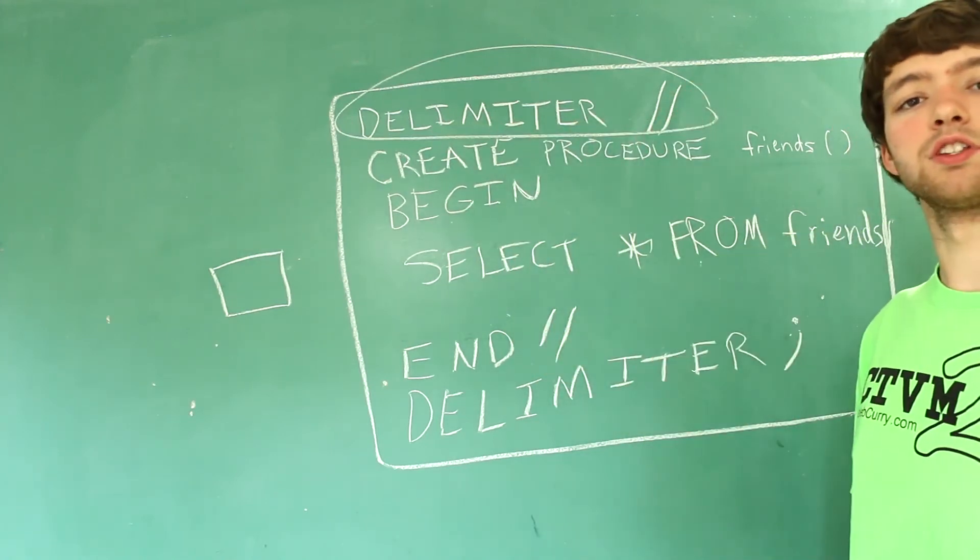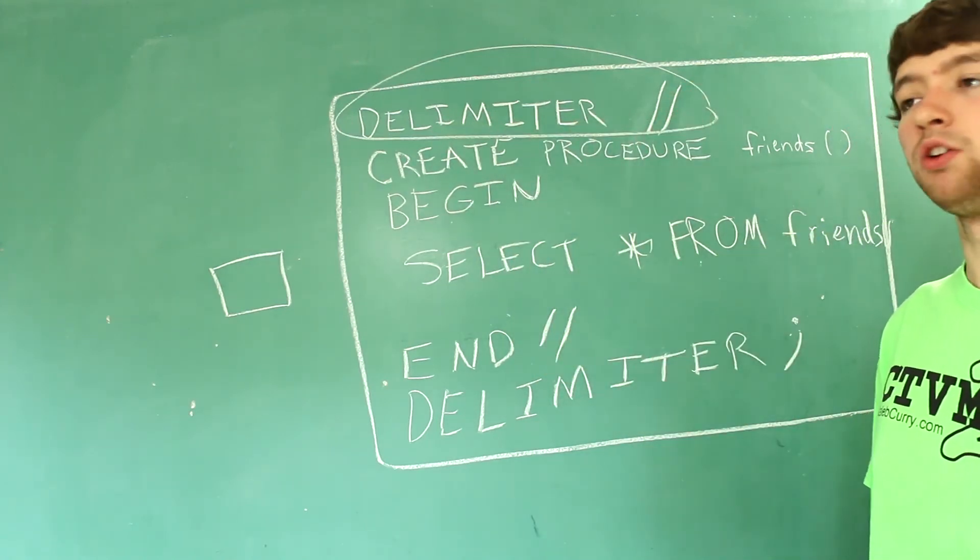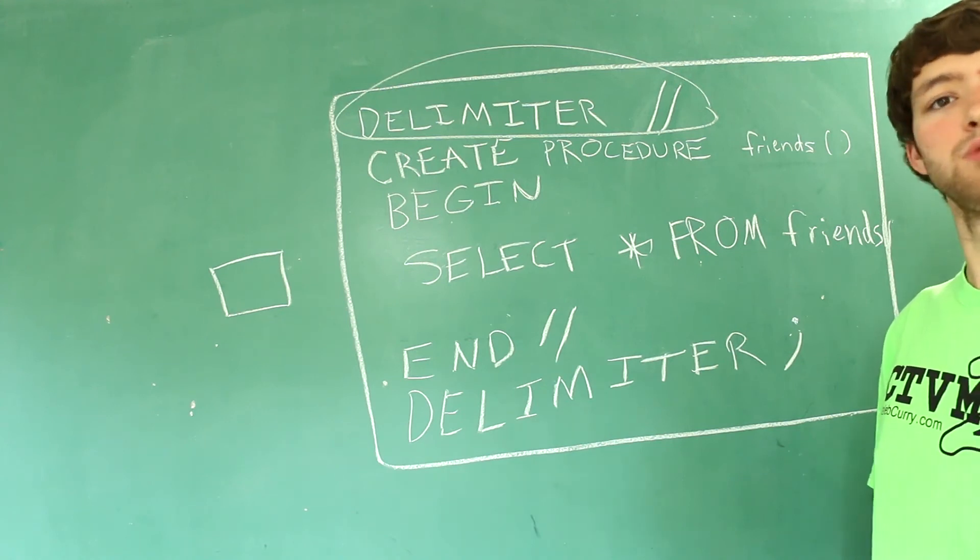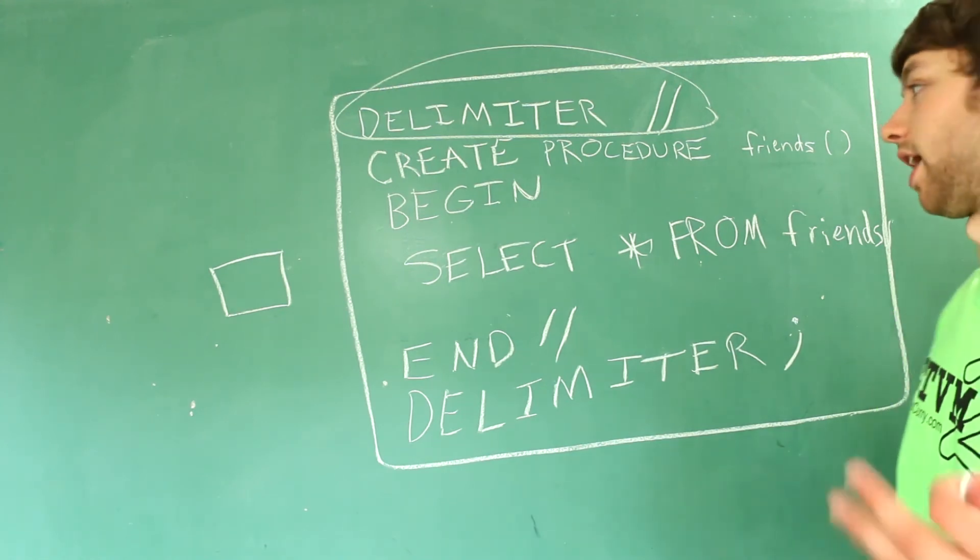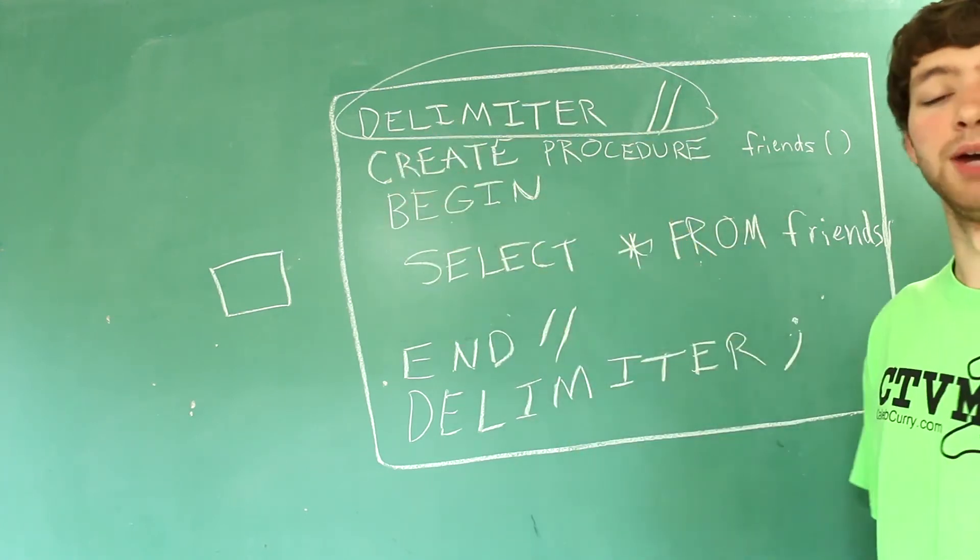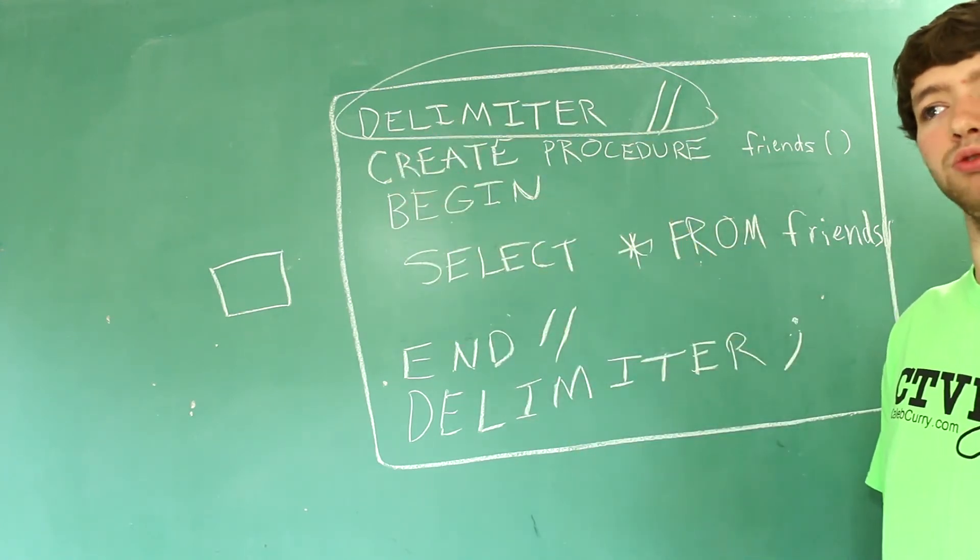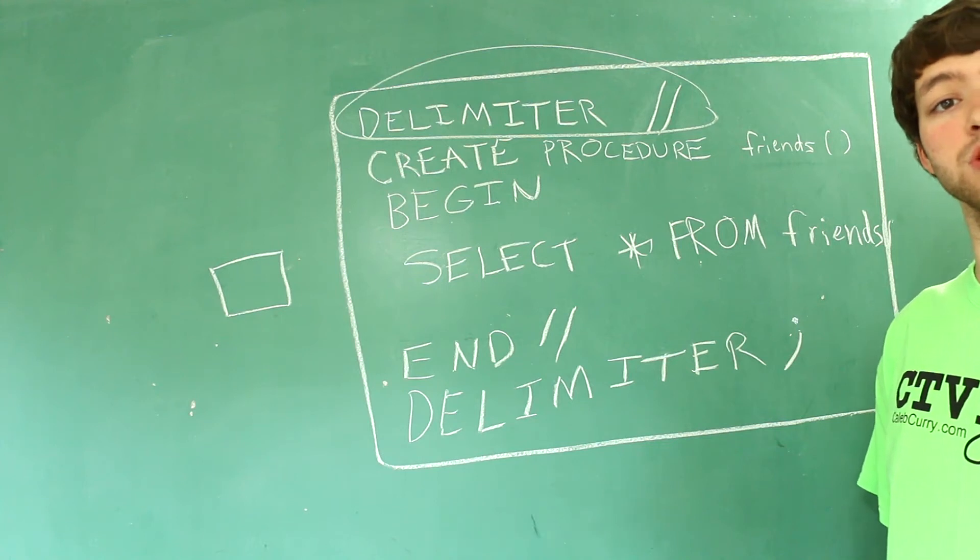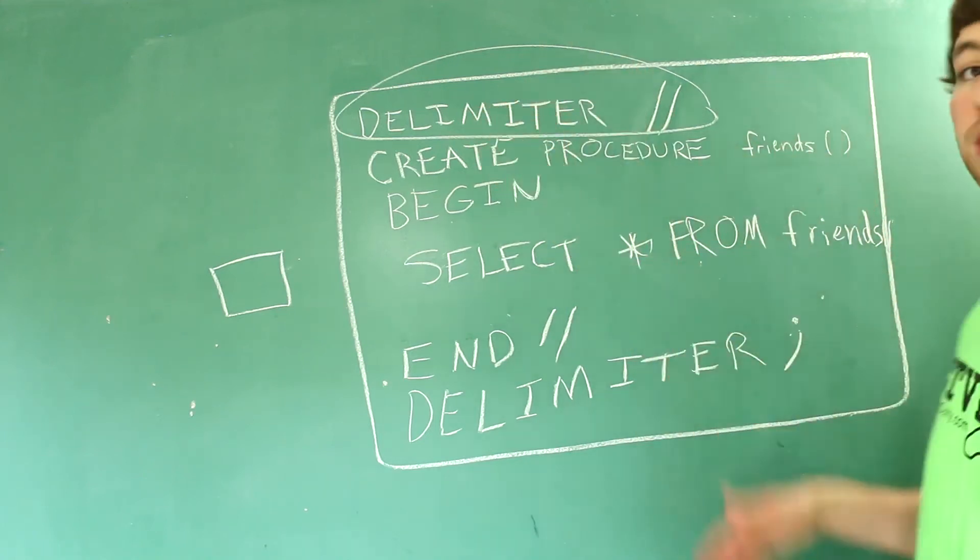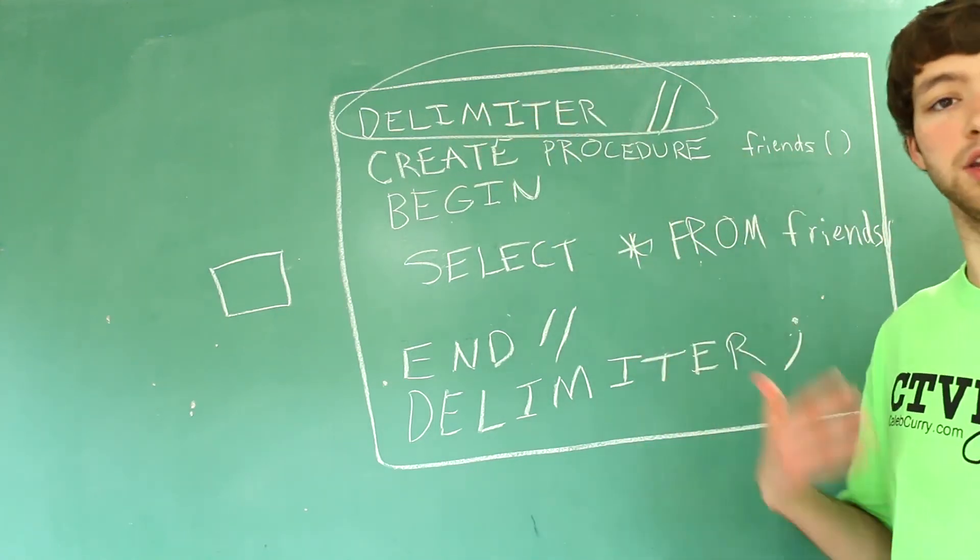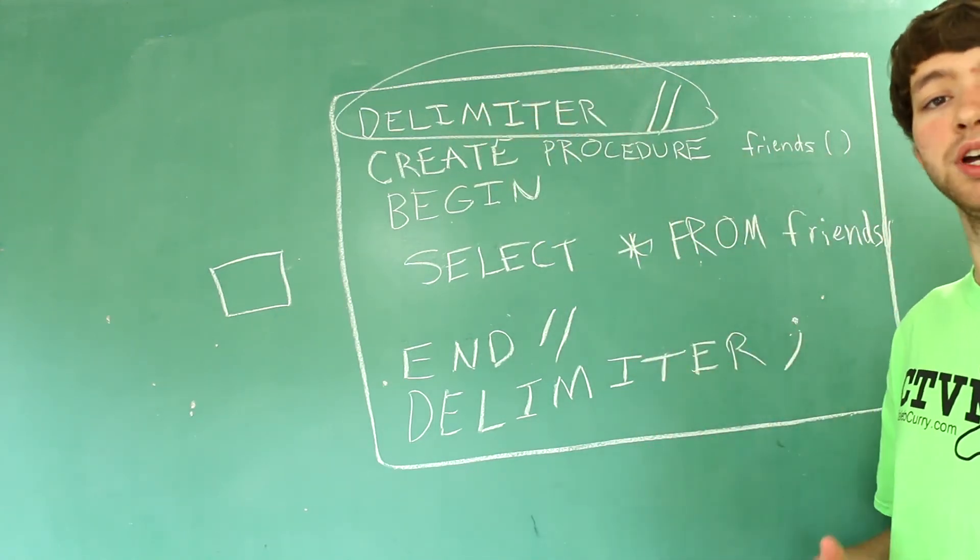But if you're using something like phpMyAdmin or this SQL fiddle tool I've been using there is a different way you need to tell it that we're using a different delimiter. And we'll get into that when we're starting to create some stored procedures and it'll make sense when the time comes. But just thought I'd let you guys know if you're typing this stuff in in phpMyAdmin for example and you're getting errors that's probably why.